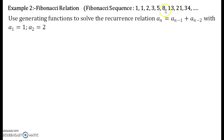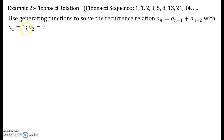So the recurrence relation that we obtain from the Fibonacci sequence is a_n equals a_{n-1} plus a_{n-2}, with the initial conditions a_1 equals 1 and a_2 equals 1. We are asked to solve this recurrence relation using generating functions.